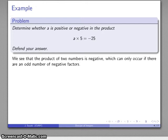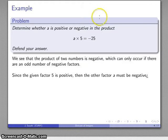For example, determine whether a is positive or negative in the product a times five, and we note here that I'm multiplying two numbers and getting a negative value. The only way that that can happen is if I have an odd number of negative factors. Well, the only factor that we have in sight is five, which is positive, which means that the other factor has to be negative.